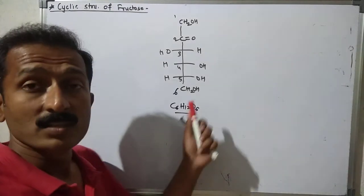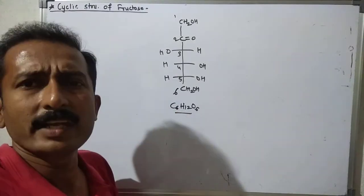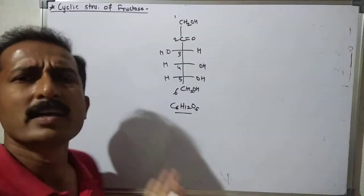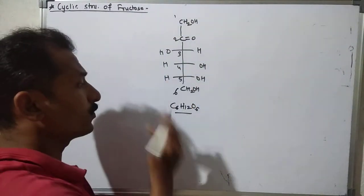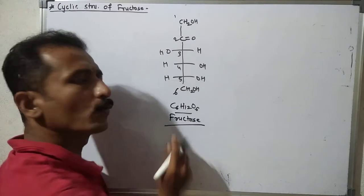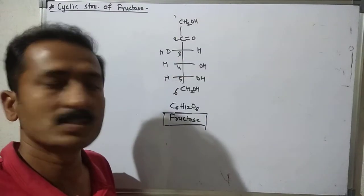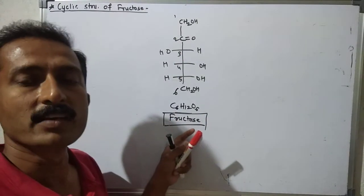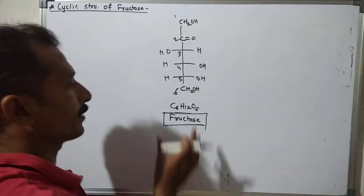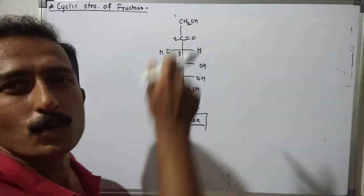This is fructose, derived from glucose — it is an isomer of glucose. The difference is that glucose has an aldehyde group while fructose has a keto group. Fructose is the sweetest sugar among glucose, fructose, and sucrose. So if asked which is the sweetest sugar, the answer is fructose.